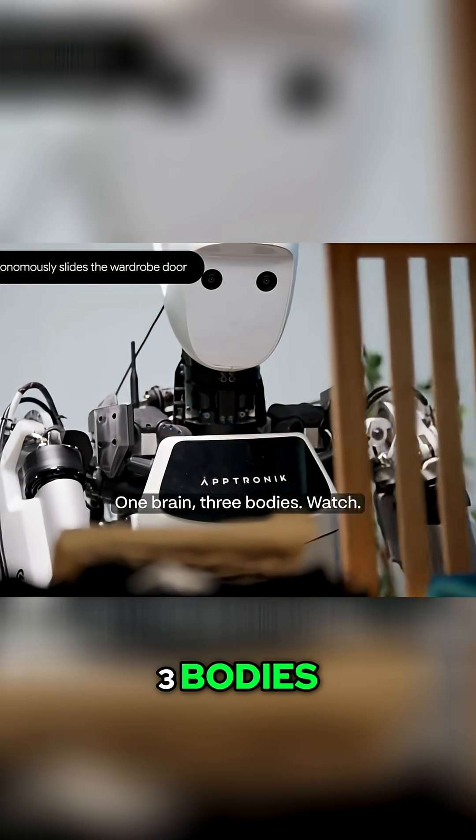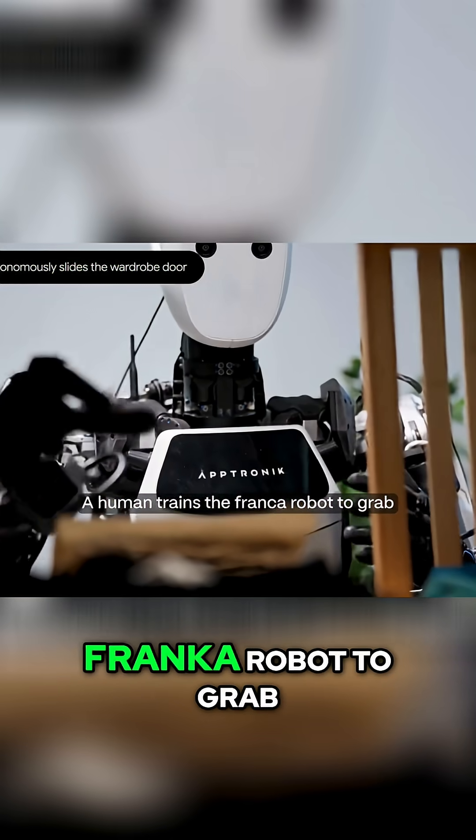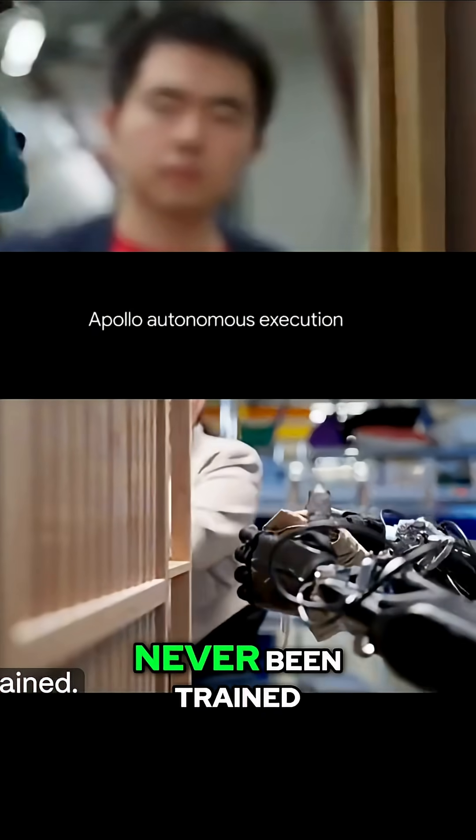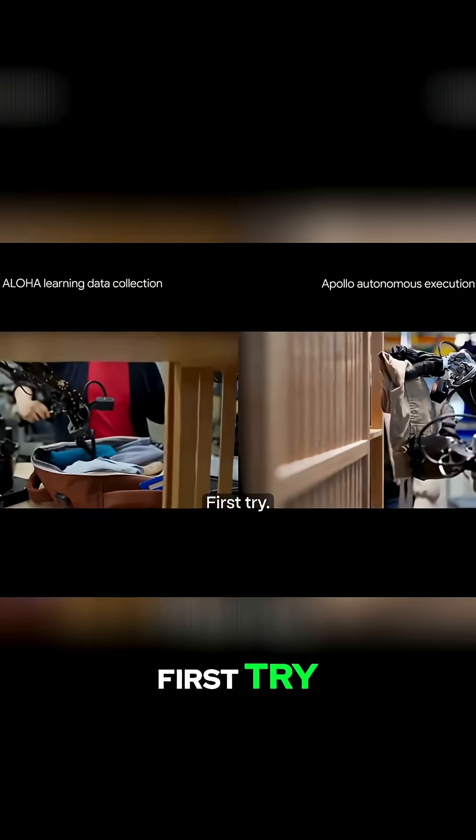One brain, three bodies. A human trains the Franca robot to grab tools from a pegboard. Now Aloha rolls up. Never been trained. And it just grabs the tool perfectly. First try.